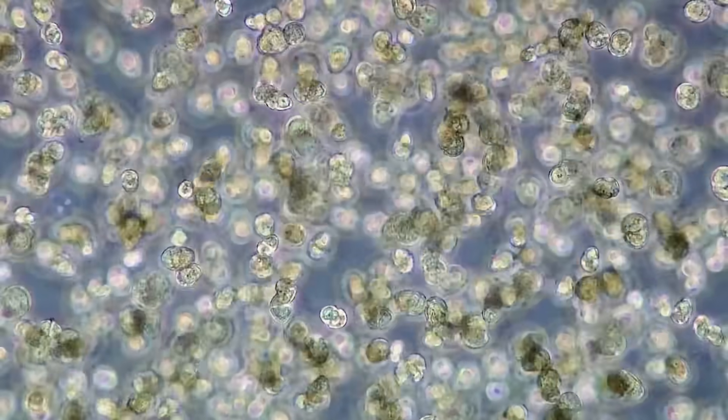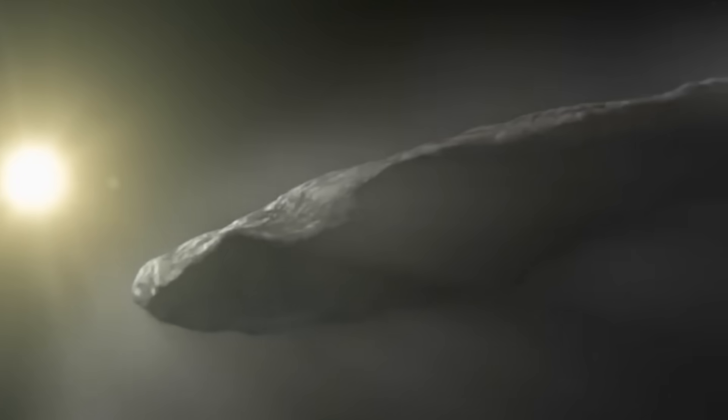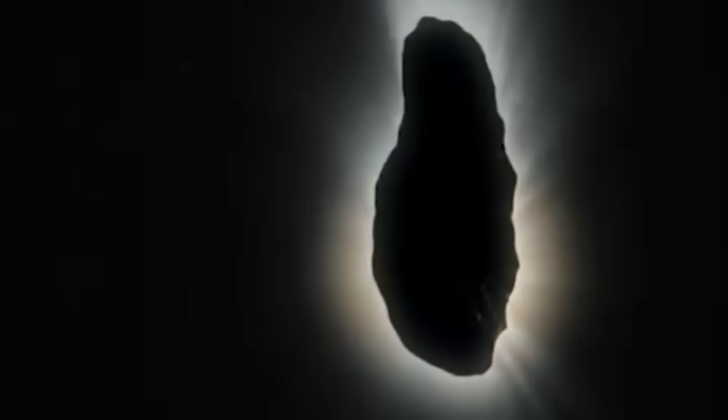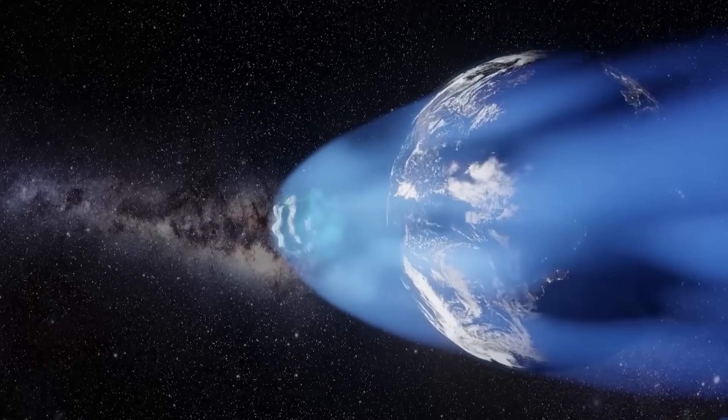The water appears chemically pristine, lacking the heavier isotopic fingerprints typically found in local comets. Some models suggest this water could have frozen into the comet as far back as 7 billion years ago, well before Earth existed.